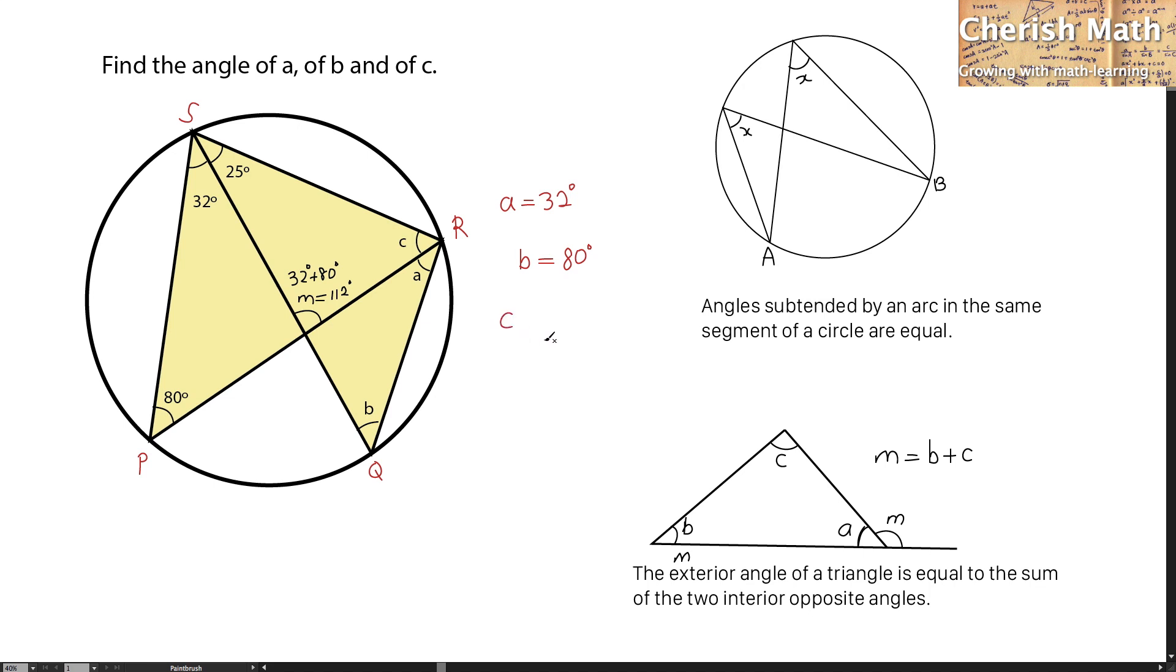We can now find the value of C by using the supplementary angle in a triangle, which is 180 degrees, take away the 112 degrees, and take away another 25 degrees. So, the value of the C is 43 degrees, and we solve all of it.